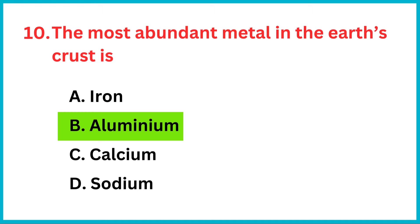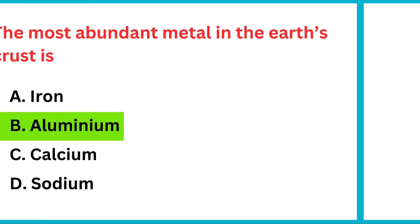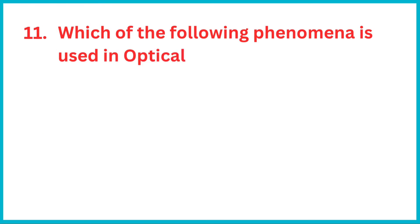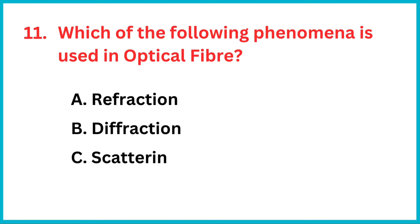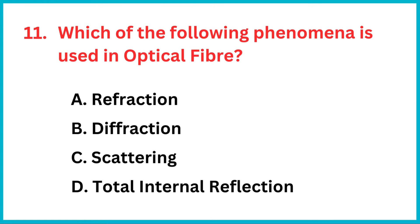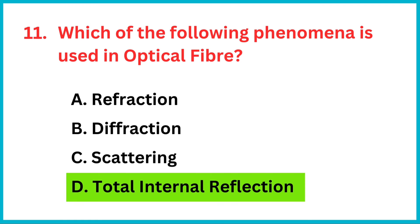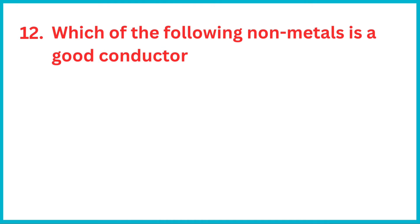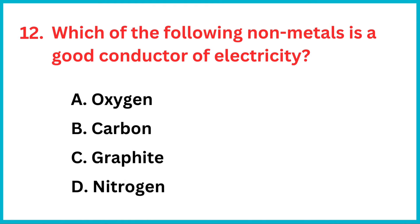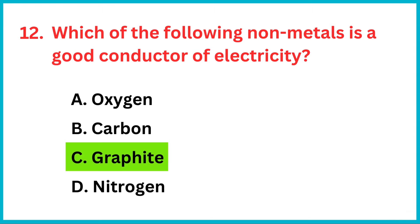The most abundant metal in the Earth's crust — the correct answer is option B: aluminum. Which of the following phenomena is used in optical fiber? The correct answer is option D: total internal reflection.